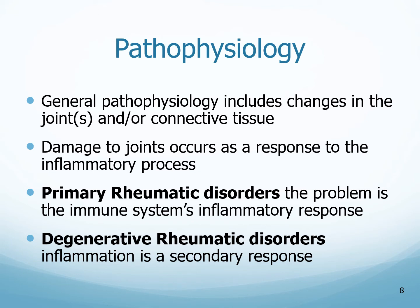The general pathophysiology will include changes in the joint and/or the connective tissue, because this connective tissue surrounds the joint to protect it and help it move. Damage to these joints will occur as a response to the inflammatory process — something will trigger the joint and make it inflamed. Primary rheumatic disorders occur when the problem is in the immune system's inflammatory response.